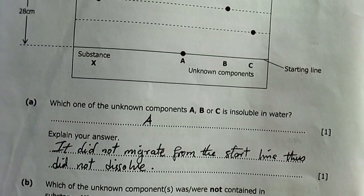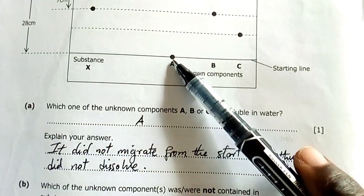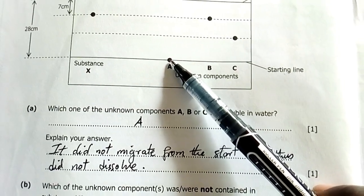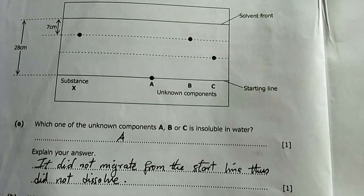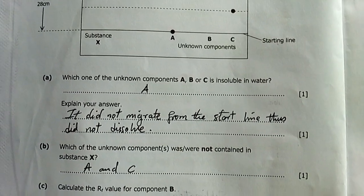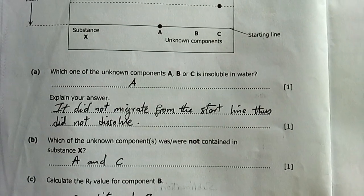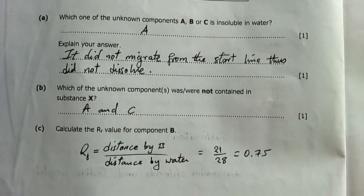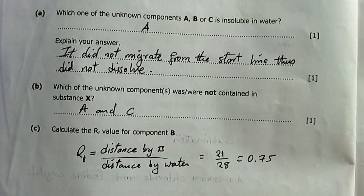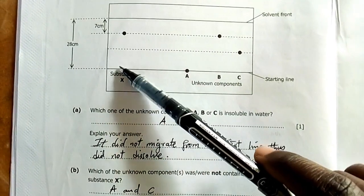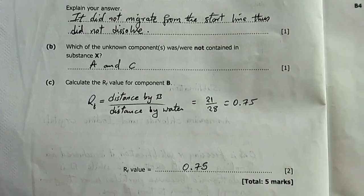Question A: Which unknown component A, B, or C is insoluble in water? A is insoluble because it hasn't dissolved anywhere to move from its spot. It did not migrate from the starting line, thus did not dissolve. Question B: Which known components were not contained in substance X? My answer is A and C. We've scored a mark there.